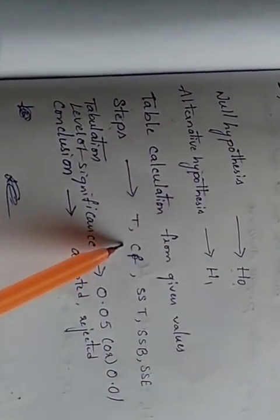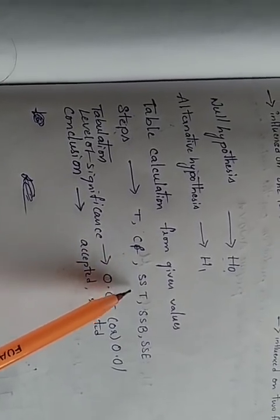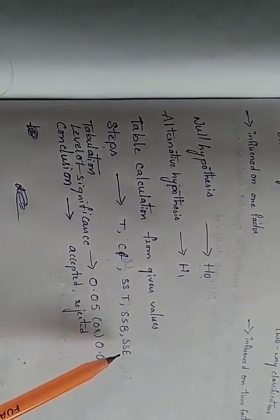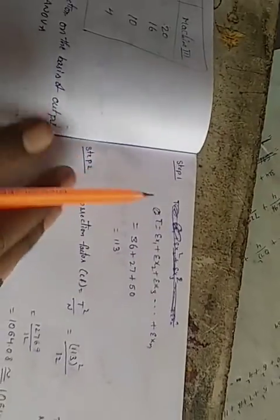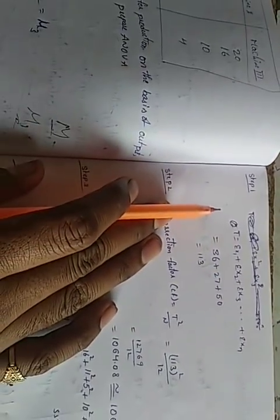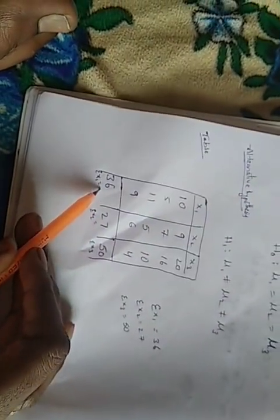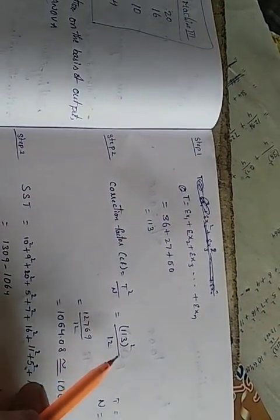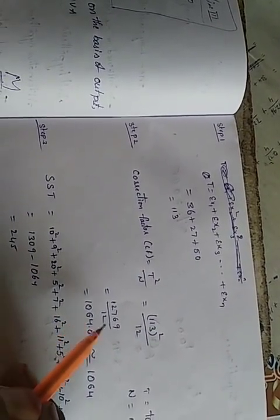Now the calculation steps: Step 1 — find T, the total sum of all observations. Step 2 — find the correction factor CF, using the formula T squared divided by n. T equals 36 plus 27 plus 50, which equals 113. The total number of observations n equals 12. So CF equals 113 squared divided by 12, which is approximately 1064.